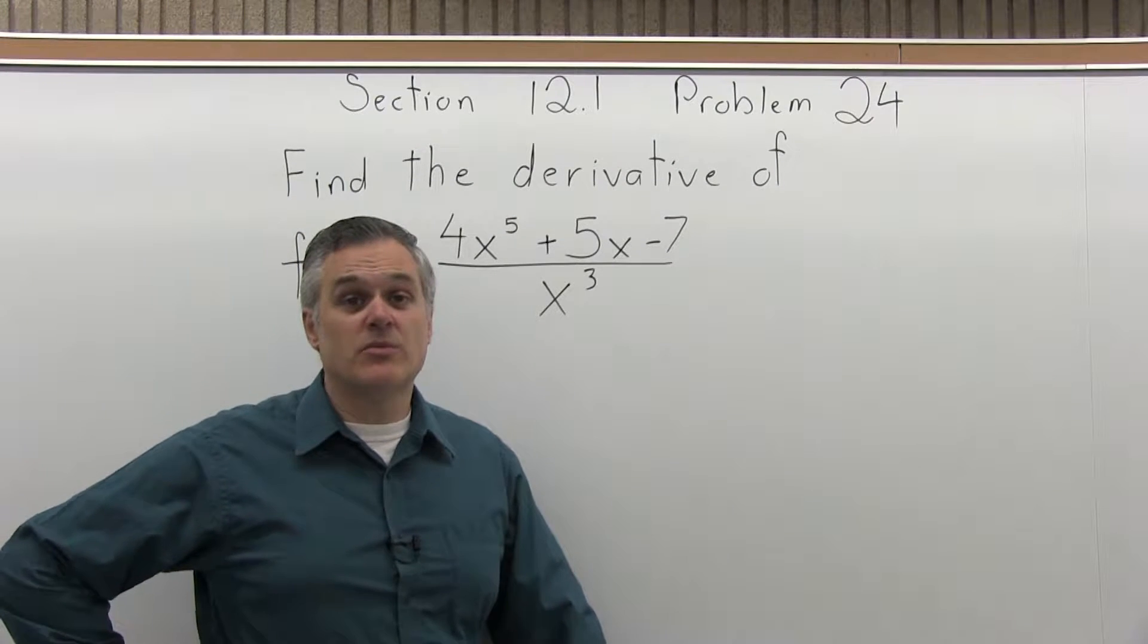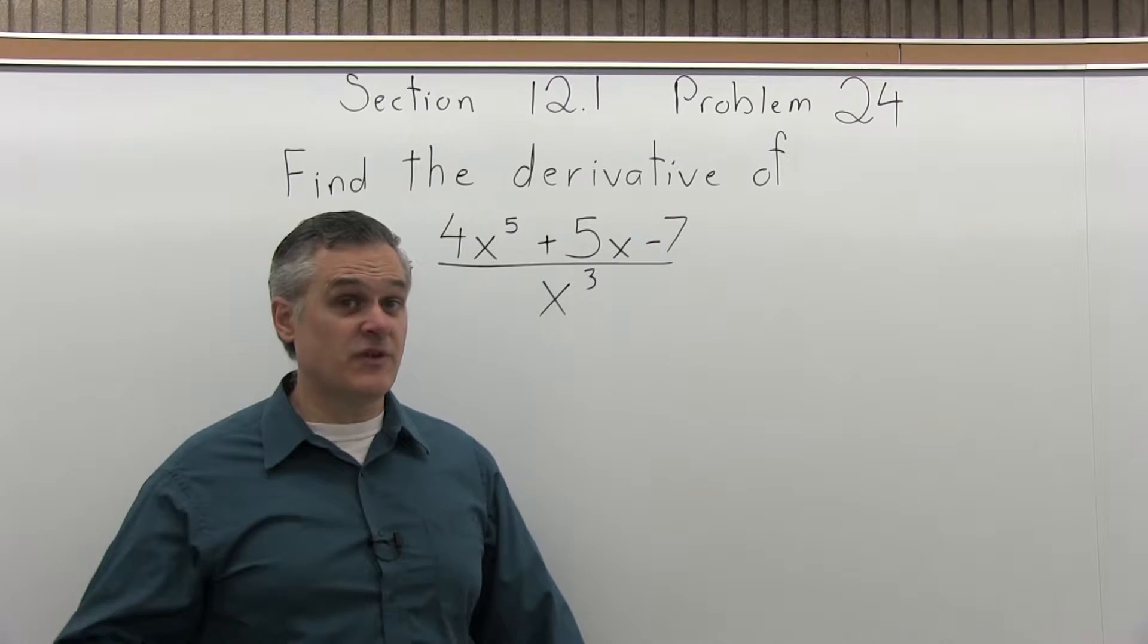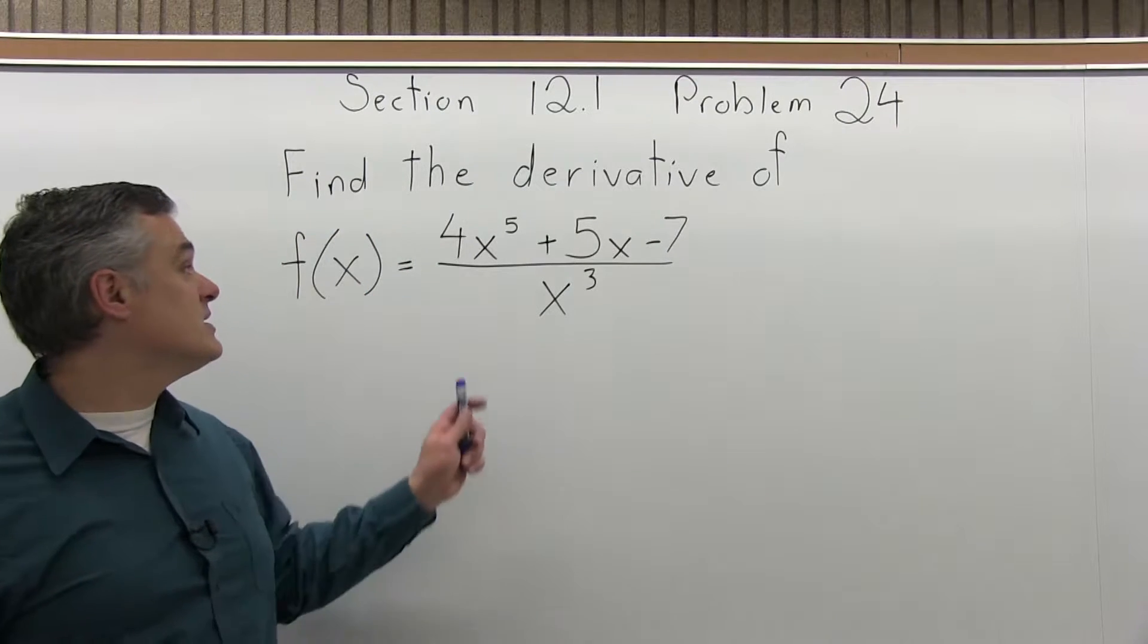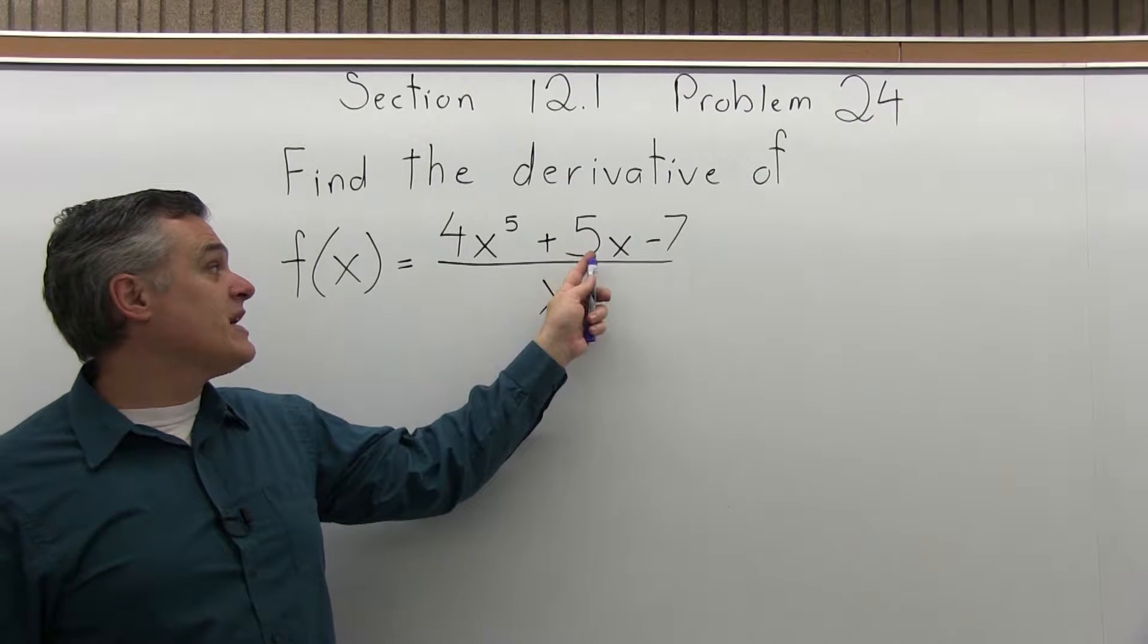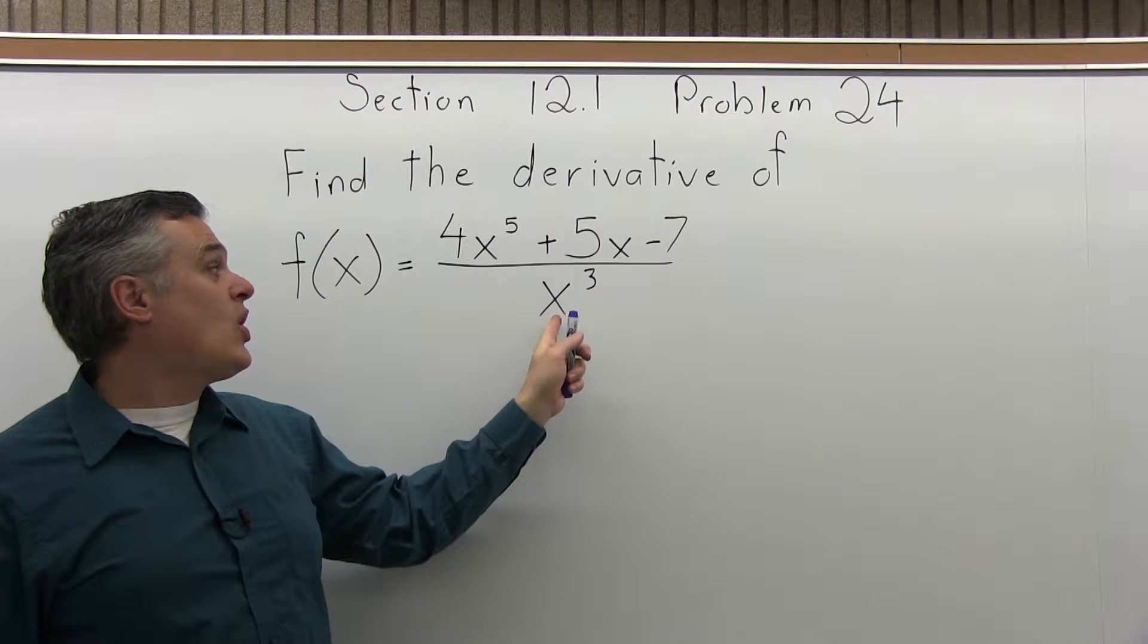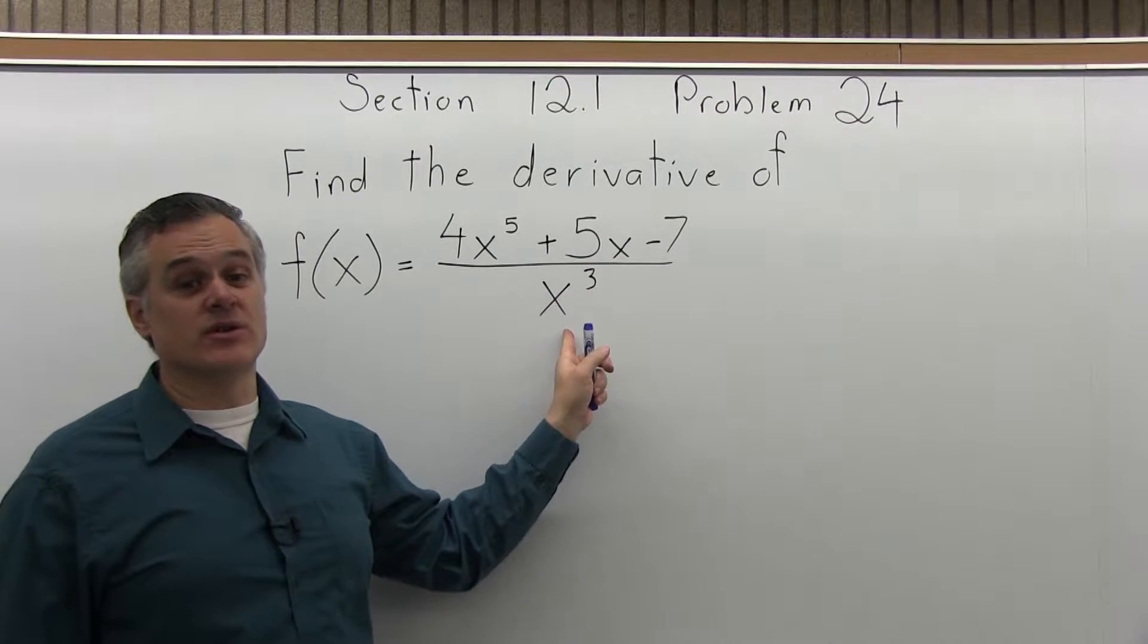This is Section 12.1, Problem number 24. It says find the derivative of the function f of x equals 4x to the fifth power plus 5x minus 7 all over x to the third.